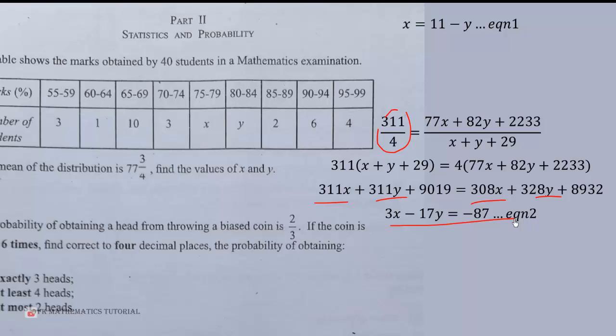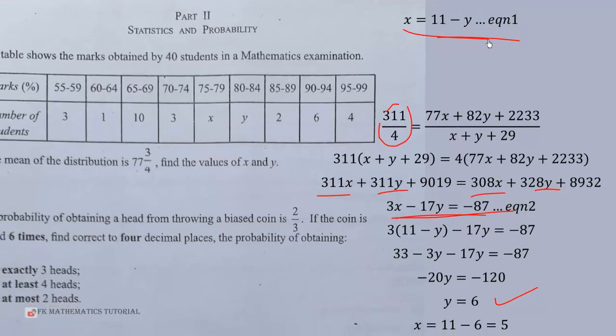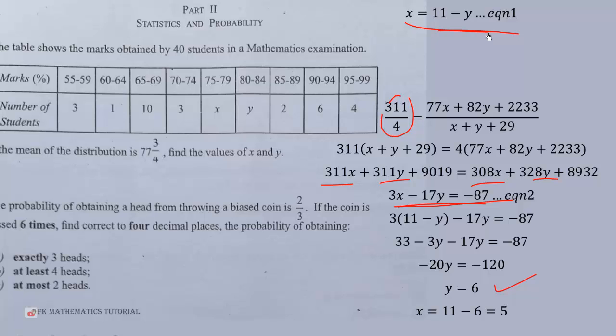I'm going to put X equals 11 minus Y into the second equation here. When we expand we get 33 minus 3Y minus 17Y equals negative 87. We solve for Y to get Y equals 6. We put Y equals 6 into this equation to get X equals 5. Therefore X is 5 and Y is 6. That is what we are asked to find.